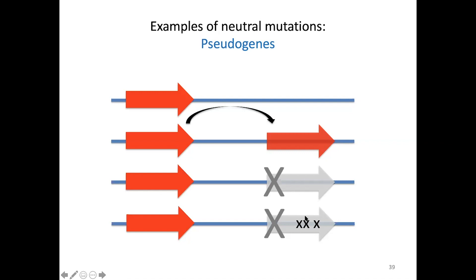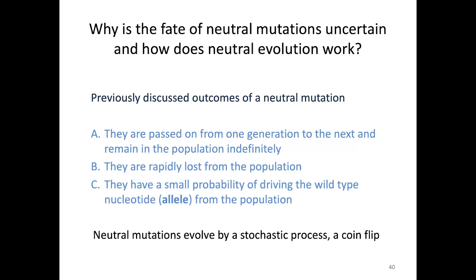Pseudogenes — dead genes — can accumulate mutations without any deleterious effects. Going back to that question about the very different fates of a neutral mutation: why can they have these very different behaviors? Focusing on outcomes B and C — B is where the mutation is lost from the population, whereas C is where the mutation fixes — those are exact opposites. The reason is that what governs changes in their frequency through time is this stochastic process, neutral genetic drift. You can think of it like the coin flip process for mutation — a random process — and random processes can often result in very different outcomes.